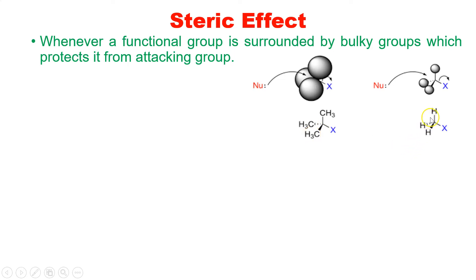Here we have a tertiary type of structure and a primary kind of structure. In the tertiary structure, the bulky groups surround X — each carbon has three hydrogens, so X is surrounded by these three carbon groups. In the primary case, the adjacent carbon has only hydrogen, which is a small atom, making it easier for the nucleophile to approach the carbon and replace the halogen.